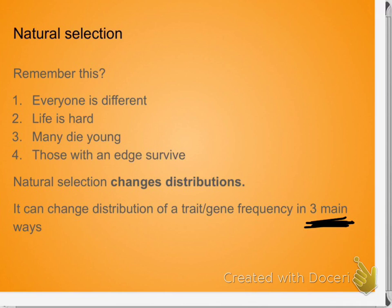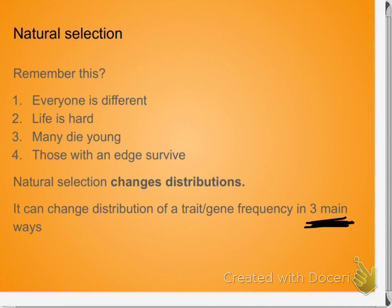Remember, we said that distributions — that's how we look at a graph like this — to look at the distribution of a trait in a population. And what we're saying is that natural selection changes that. So there are three ways natural selection changes that. And today we get to talk about — oh, this is so grim — giant babies, dead babies, and dead mamas.